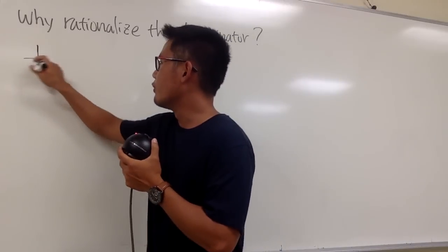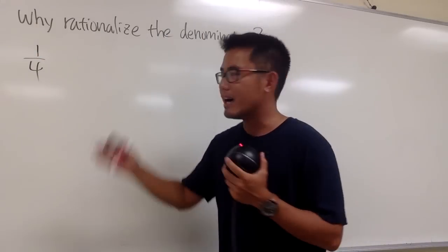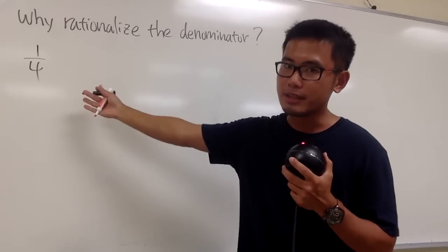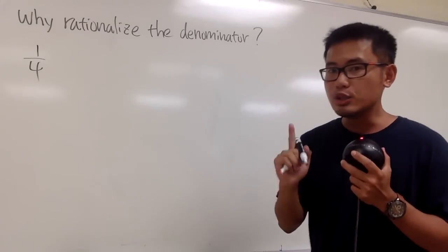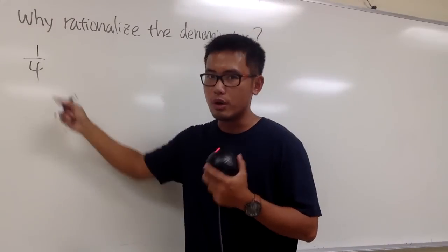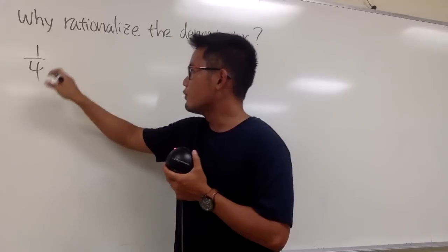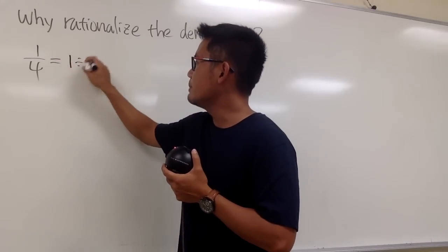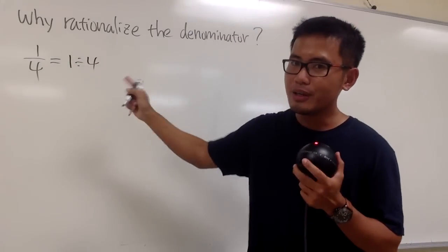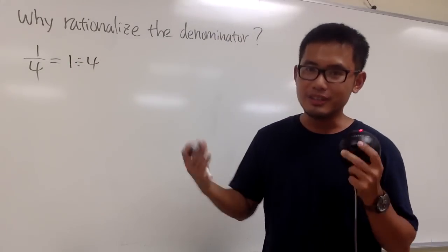Let's talk about a fraction 1 over 4. Suppose I don't have the decimal version memorized and I don't have a calculator, but I still want to figure out the decimal version of 1 over 4. Well, 1 over 4 is the same as 1 divided by 4, and to figure this out I can use long division.